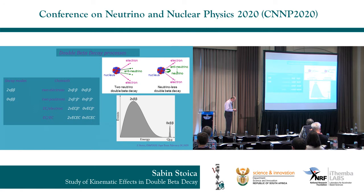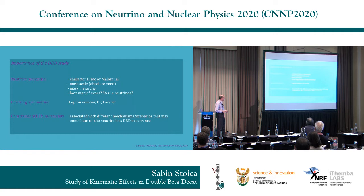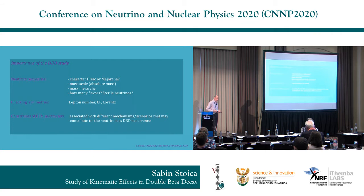The importance of double beta decay studies is that they address very important things about neutrino properties, like their character - Dirac or Majorana - mass scale, mass hierarchy, how many flavors, as well as checking symmetries such as lepton number and CP. Also included are searches for Lorentz invariance violation and, of course, constraints on many beyond-standard-model parameters associated with different mechanisms of this decay mode.